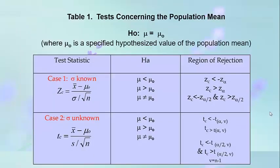The two-tailed test concerning the population mean has null hypothesis mu equal to the hypothesized value of mu, where mu is a specified hypothesized value of the population mean. If the standard deviation is known, the z-test is used. We can use the alternative hypothesis: mu less than the hypothesized value, with rejection region computed z less than negative z-alpha.